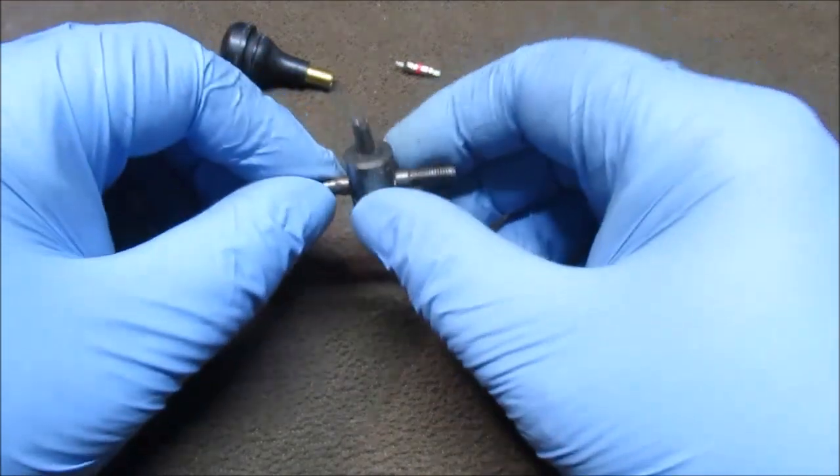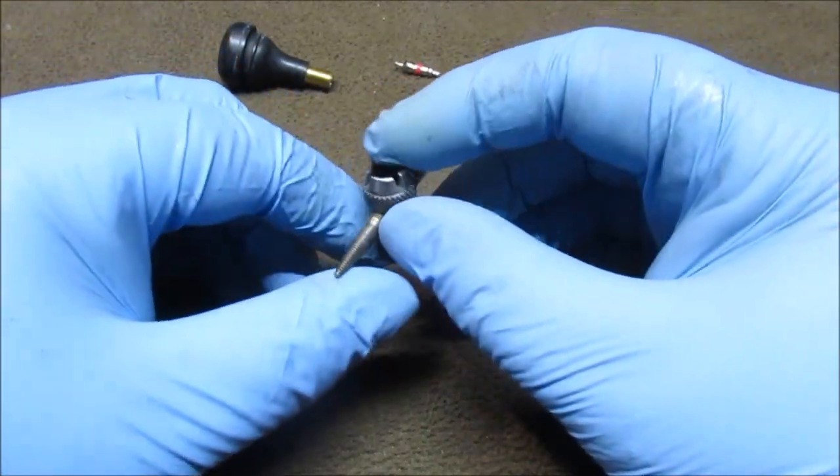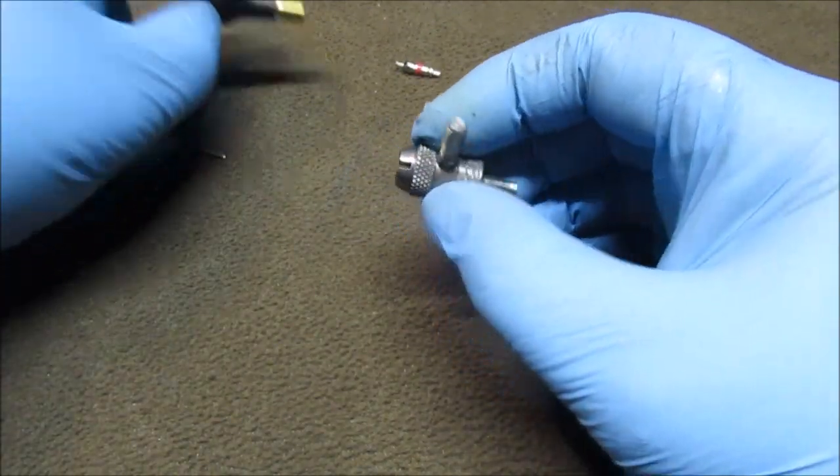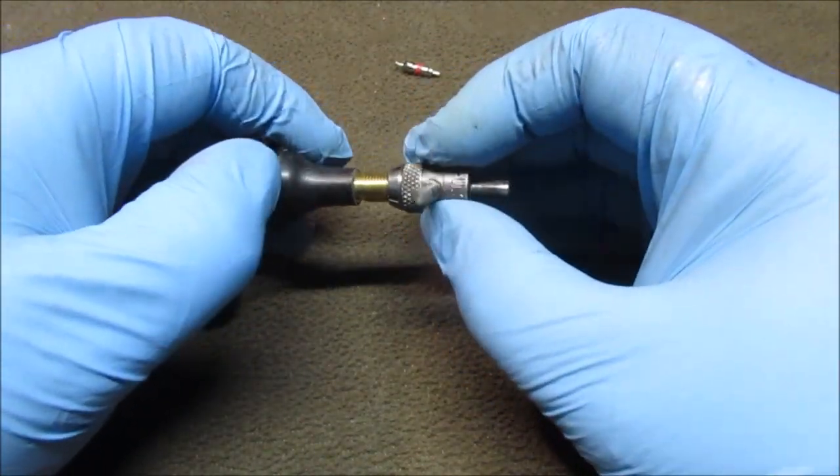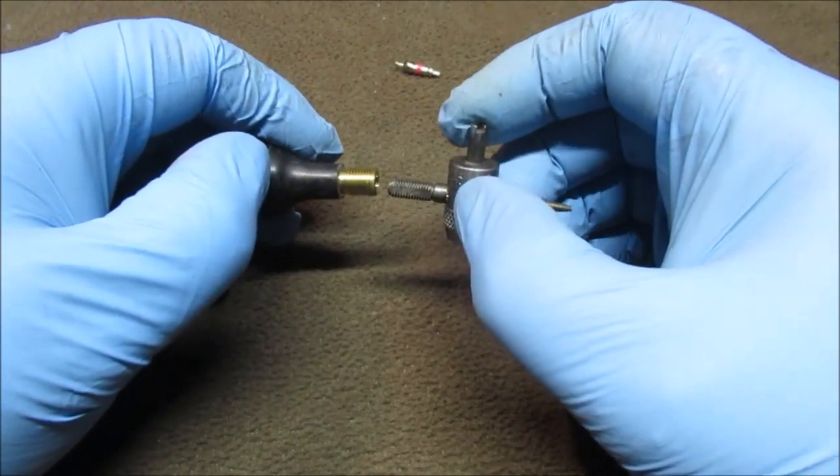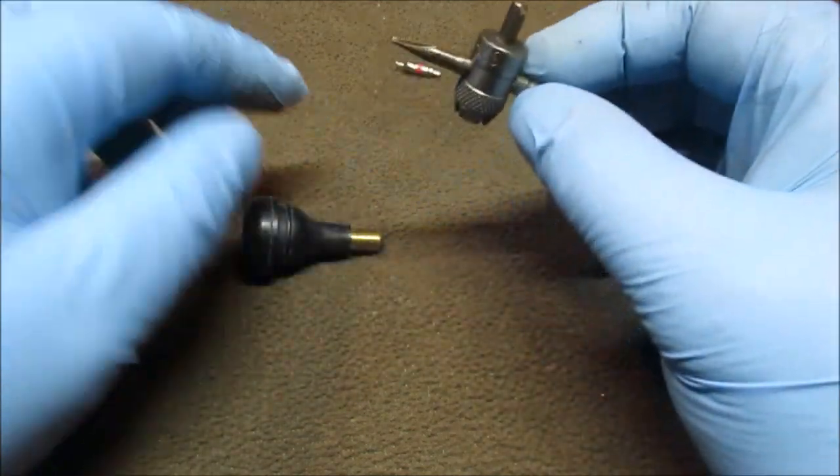This takes out your valve core. This is to clean your threads up here. This is to clean your threads up on the inside. And this is to remove when they're broken.